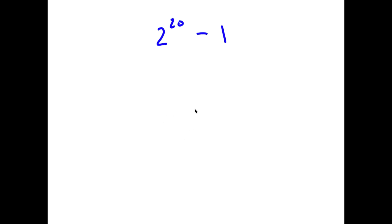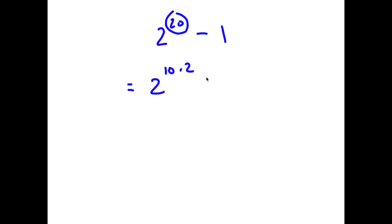In this problem, I have 2 to the power of 20 minus 1. To solve this, I'm going to first rewrite 20 as 10 times 2. So now I have 2 to the power of 10 times 2 minus 1.